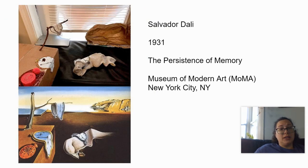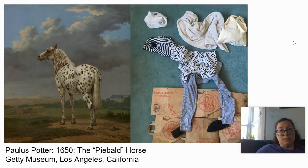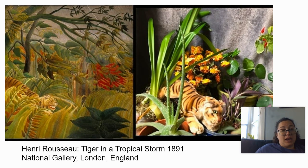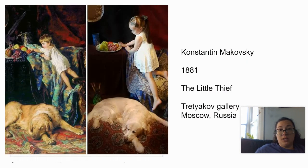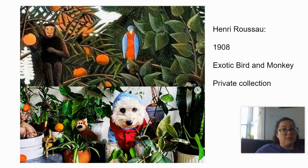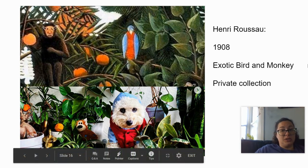Salvador Dali — this artist actually painted some of these props to go in and recreate this landscape. We've got the piebald horse created out of laundry and Trader Joe's bags to create the ground. We've got Henry Rousseau's Tiger in a Tropical Storm, hiding in a bunch of plants with some kind of sheet as a backdrop. We've got the little thief, even getting the dog involved. We've got another Rousseau using the dog and the outside, with some oranges in there.